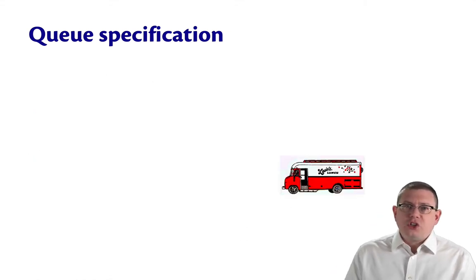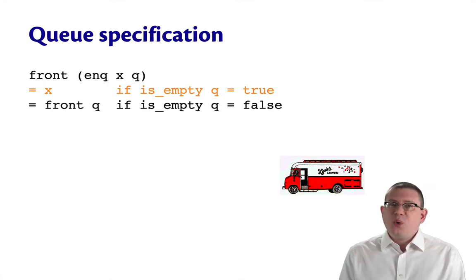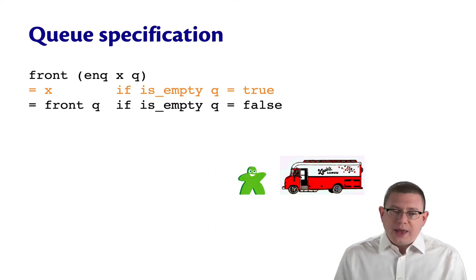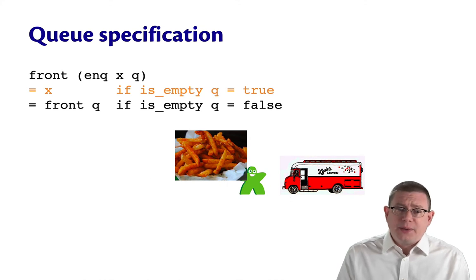Let's drill down into those third and fourth equations now. Suppose you were going to go get lunch at Louie's lunch. Here's what that third equation is telling us about the queue. What if the queue is already empty, so there's no one standing in line at the food truck? Then you can just walk right up to it. You will be at the front of the queue after being enqueued. And then you can get whatever you want, maybe some tasty Cajun fries, for example.